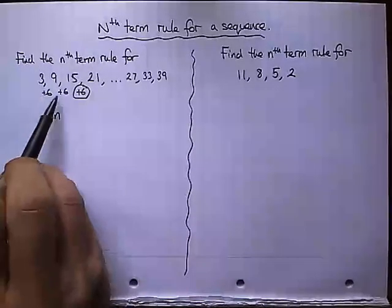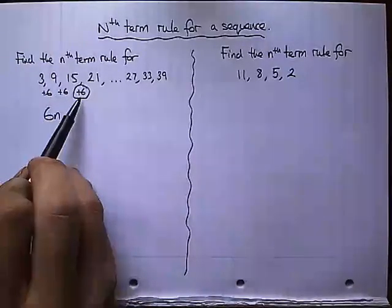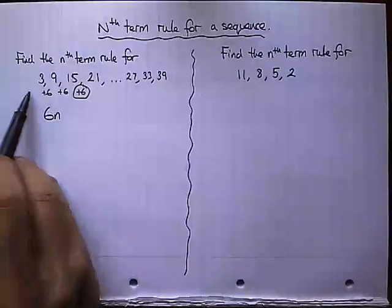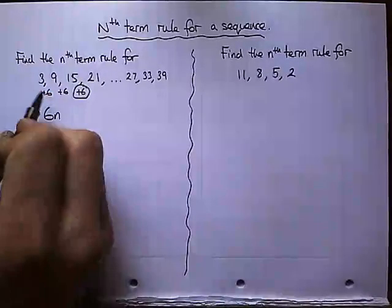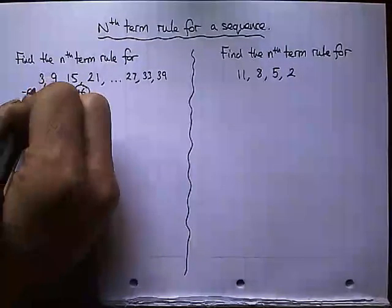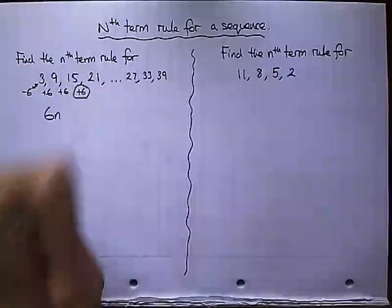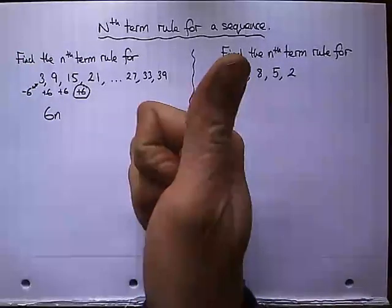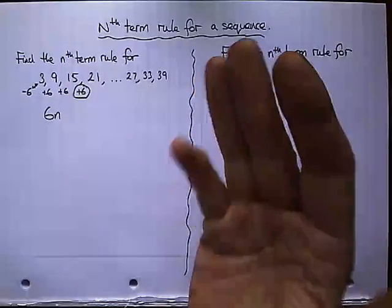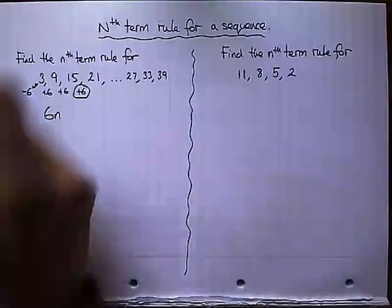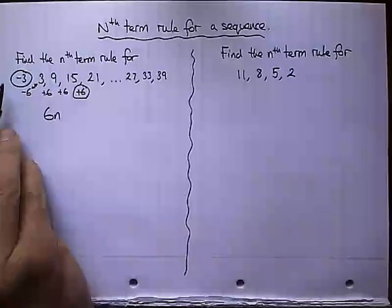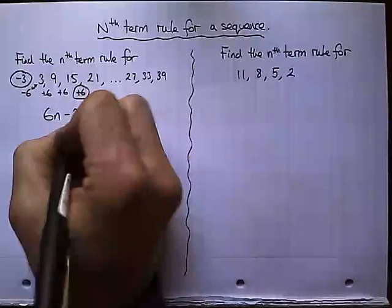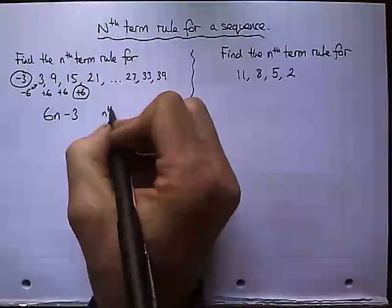So what we do is we take this difference that we've been using, this plus 6, and we go back to the very first term in our sequence. And if this is a plus, we use a minus instead. And what we do, instead of adding 6, we take off 6 from the first term. So 3 take away 6, count down from 3, so 2, 1, 0, minus 1, minus 2, minus 3. And this number that we've worked out is the bit that we add or subtract. Because it's a minus 3, then we take off 3. And that is your nth term rule.